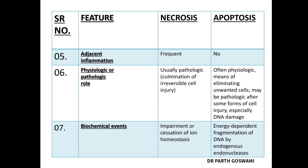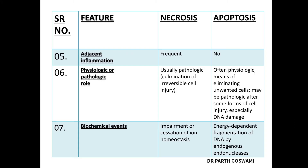Because of the membrane damage in necrosis, you will have adjacent inflammation, while in apoptosis there will be no inflammation because the membrane is not damaged. Remember that necrosis is always pathological, while apoptosis can be physiological as well as pathological.